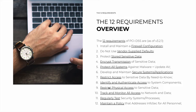Requirement 8 is about identifying and authenticating access to system components. Every person has a unique ID, they use strong authentication, and other measures to make sure that every action is tracked back to the user. Requirement 9 is about restricting physical access, safely storing and moving physical media, visitor control, and so on. Requirement 10 is about tracking and monitoring all access to network and data — in other words, logging, logging, and more logging. Requirement 11 is about regular vulnerability and penetration testing of systems and processes. And finally, Requirement 12 is about maintaining a policy that addresses information security for all personnel.